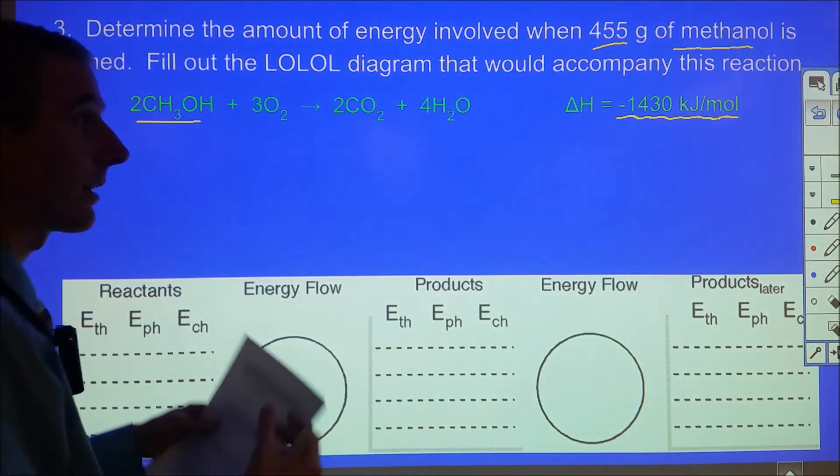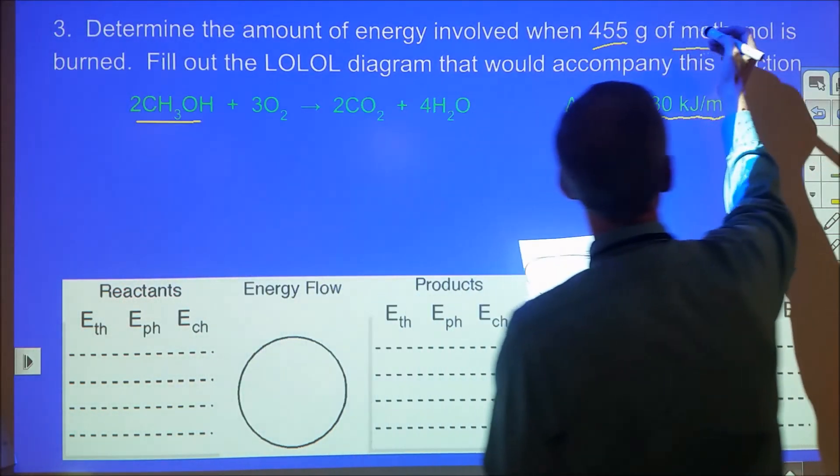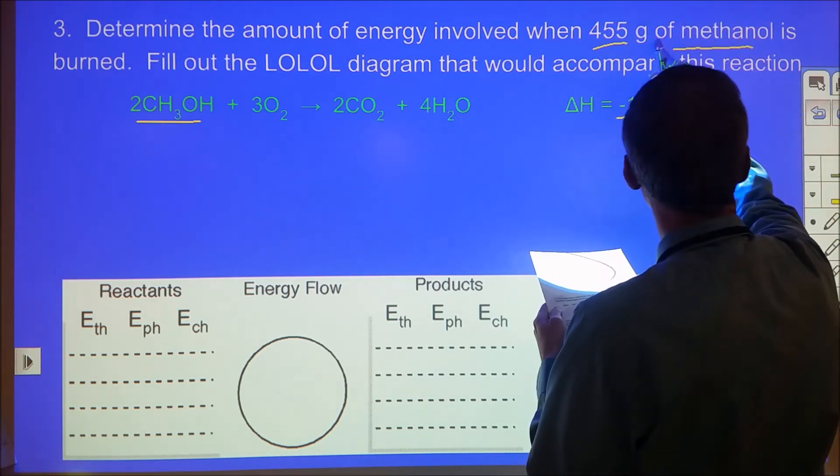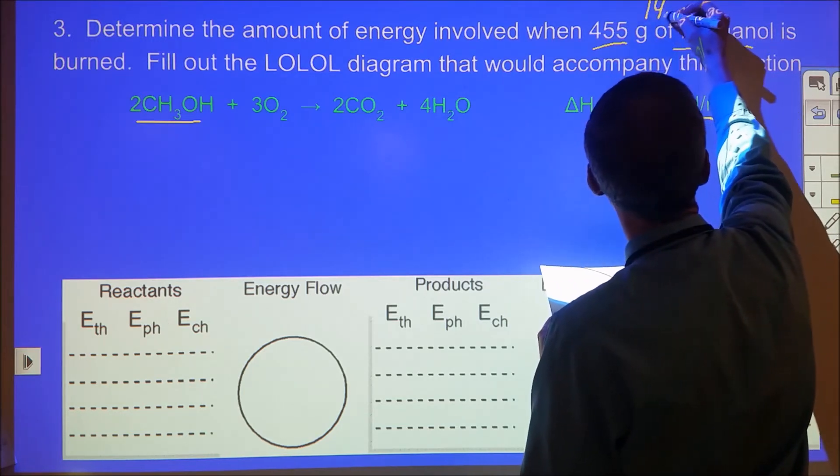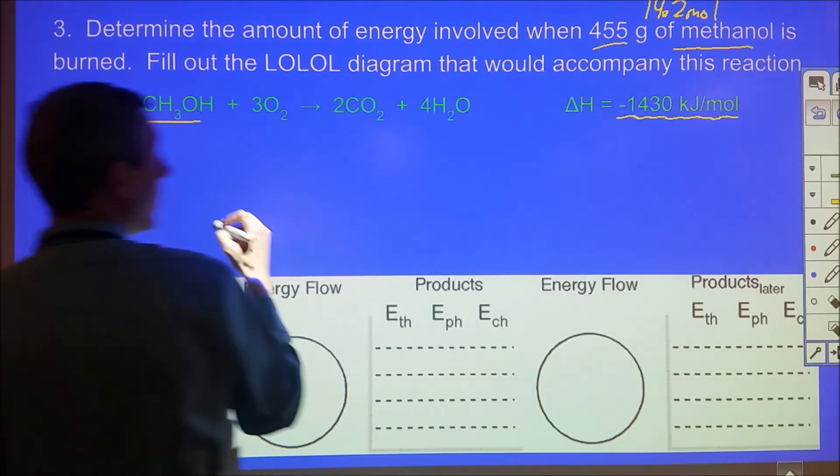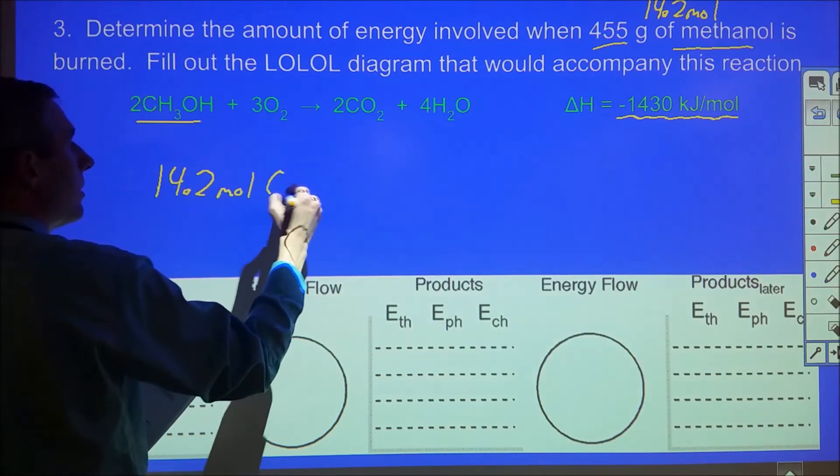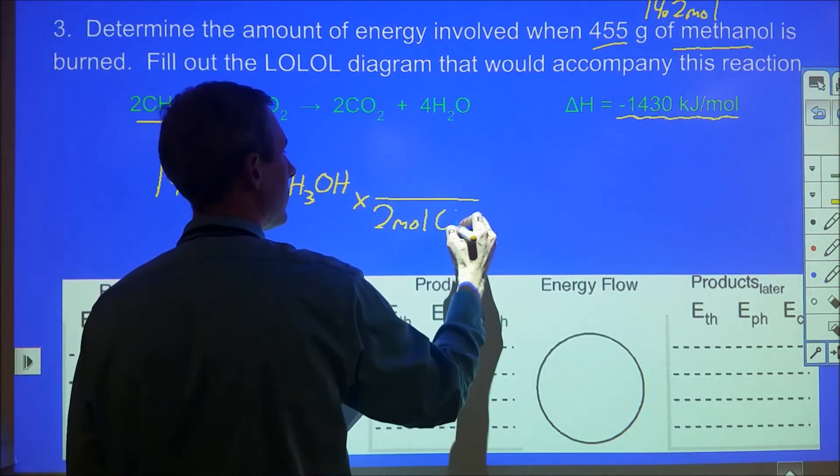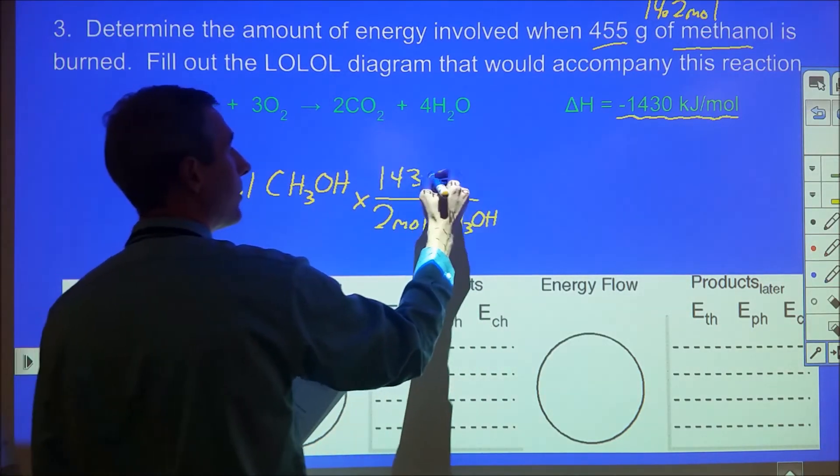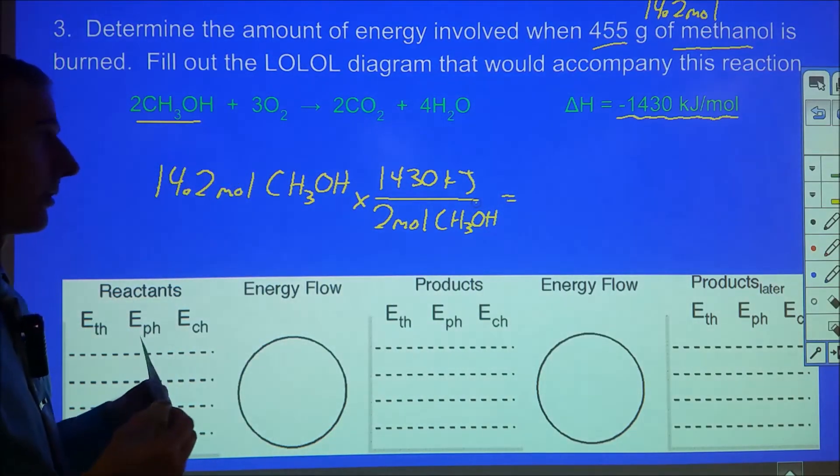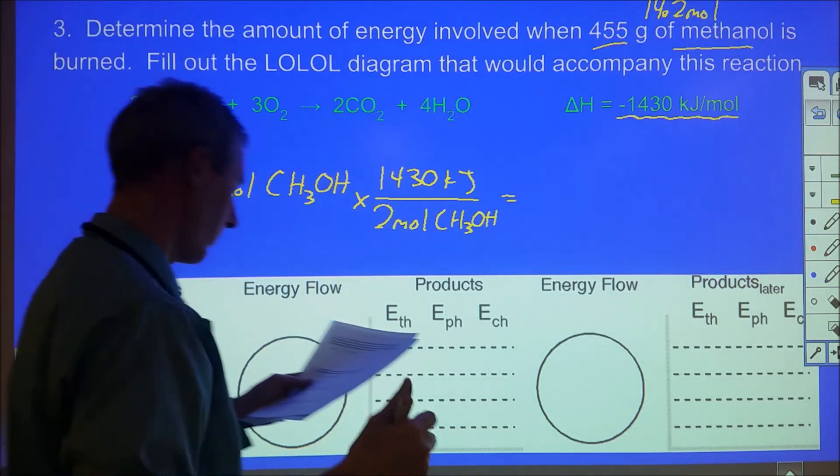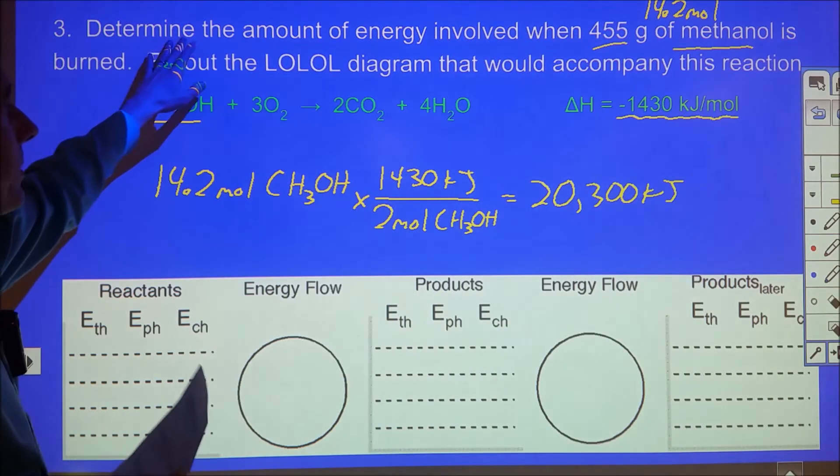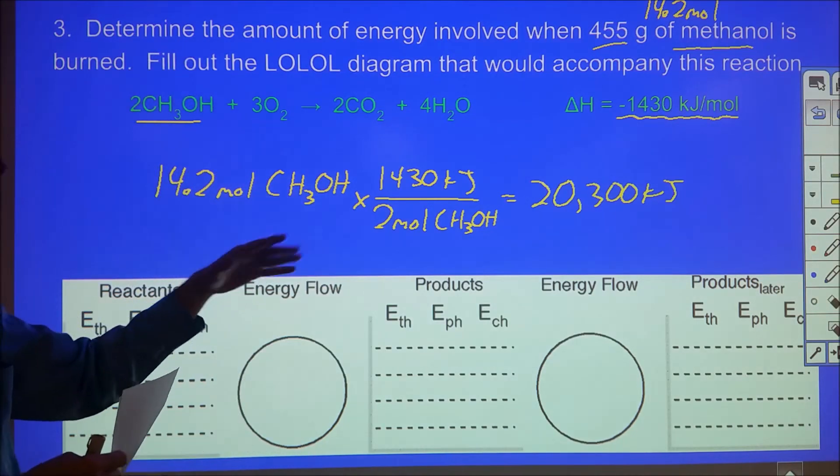455 grams of methanol divided by the molar mass of 32.05 grams per mole is 14.2 moles of methanol. We know that for every two moles of methanol, 1430 kilojoules of energy change is produced. So 14.2 divided by two times 1430 comes out to 20,300 kilojoules released.